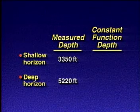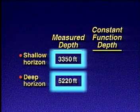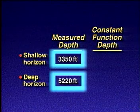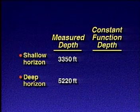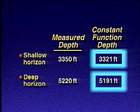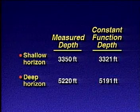Earlier, we said that the measured well depths to the shallow and deep horizons were 3,350 and 5,220 feet, respectively. Using the constant function method, we calculated the depths to be 3,321 and 5,191 feet, which are close but not exact.